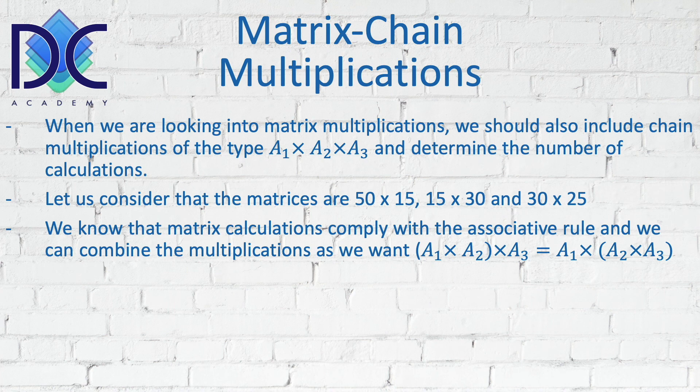We can first multiply A1 with A2, and that product multiply with A3. Or we can first multiply A2 with A3, and then multiply A1 with that result.